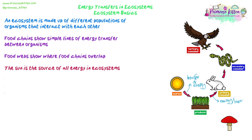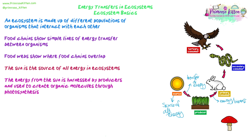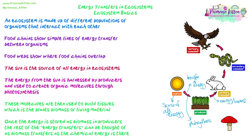The sun at the start of the food chain is the source of all energy in ecosystems. The energy from the sun is harnessed by producers — plants, algae, and photosynthetic bacteria in the oceans — which absorb that light energy and through photosynthesis produce organic molecules, including things like glucose, but also amino acids, lipids, and other carbohydrates.